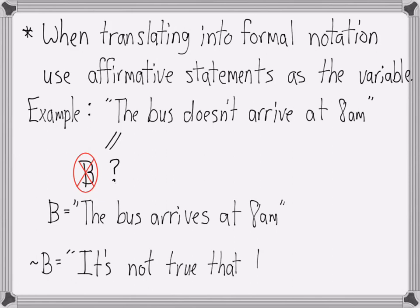Then we can write the negation of b. It's not true that the bus arrives at 8am. The advantage of this is that it shows us more about the original statement. 'The bus doesn't arrive at 8am' is better shown by the negation of b than by a single simple statement b.